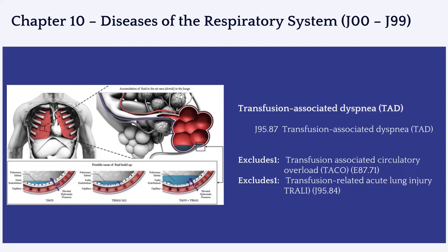For chapter 10, Diseases of the Respiratory System, there is only one code changed: J95.87 for transfusion associated dyspnea (TAD). Review the tabular list for this code carefully, since there is an excludes one note for transfusion associated circulatory overload coded with E87.71, and also transfusion related acute lung injury coded to J95.84. These are excludes one notes and you cannot code J95.87 when these two conditions have been documented.